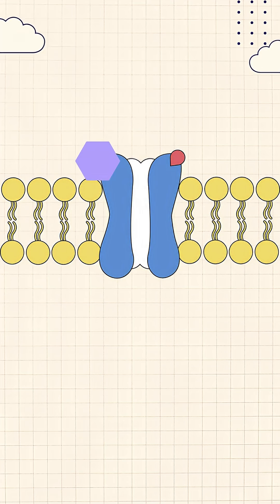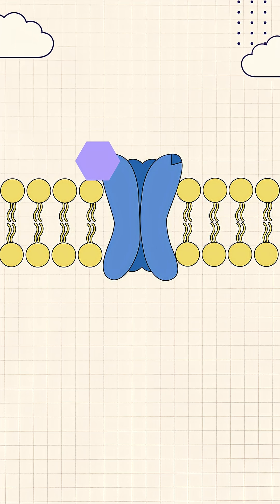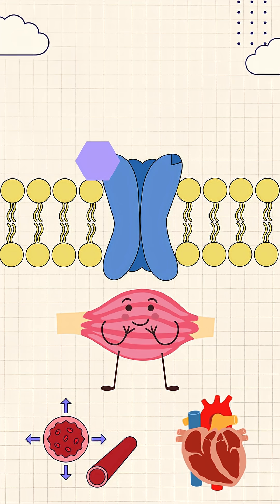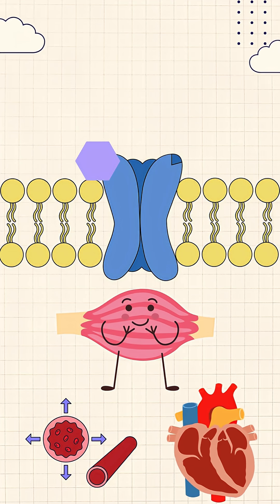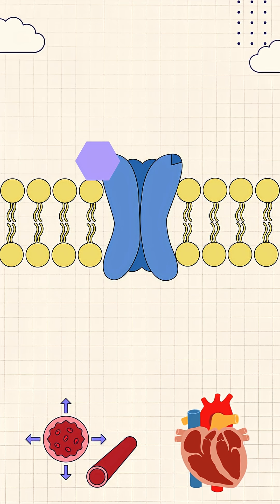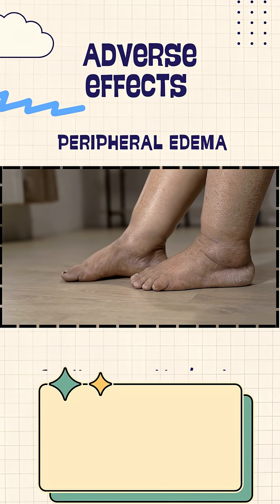Amlodipine blocks these calcium channels, which means less calcium enters and the muscles relax instead of contracting. Relaxed muscles mean wider blood vessels, which lowers blood pressure and improves oxygen supply to the heart. You can think of amlodipine as a road opener — it widens the vessels so blood can flow smoothly.